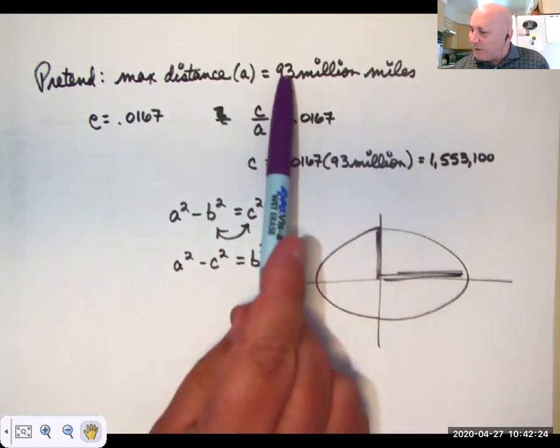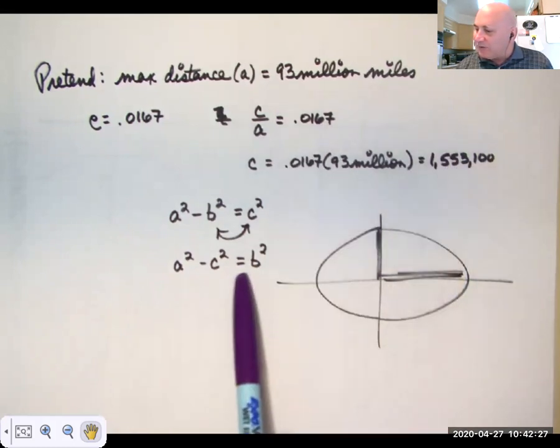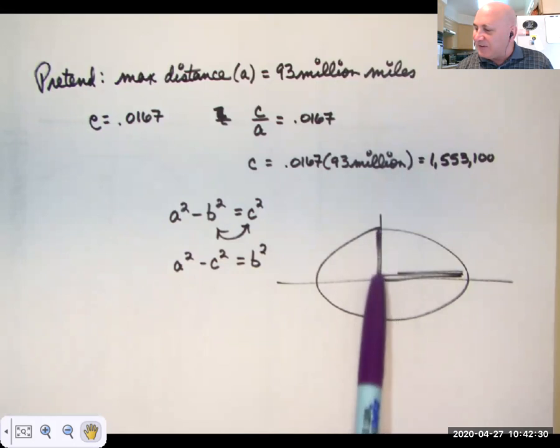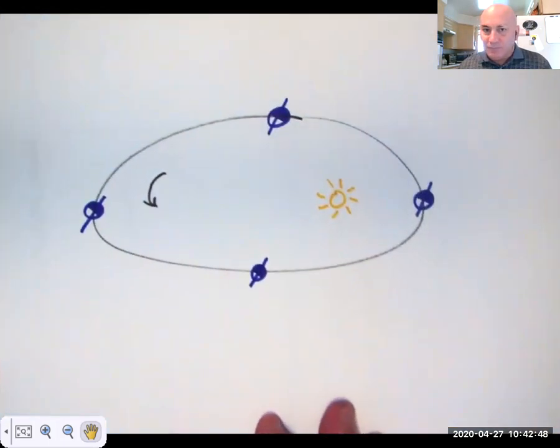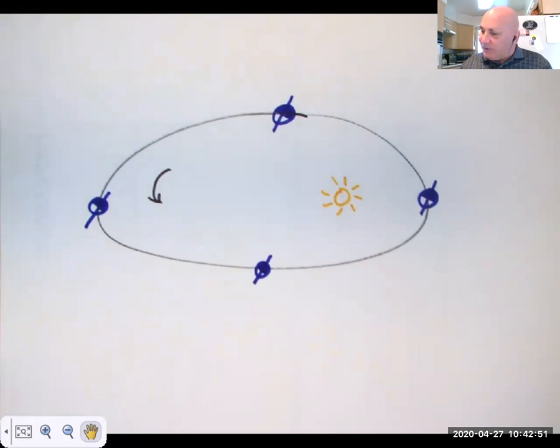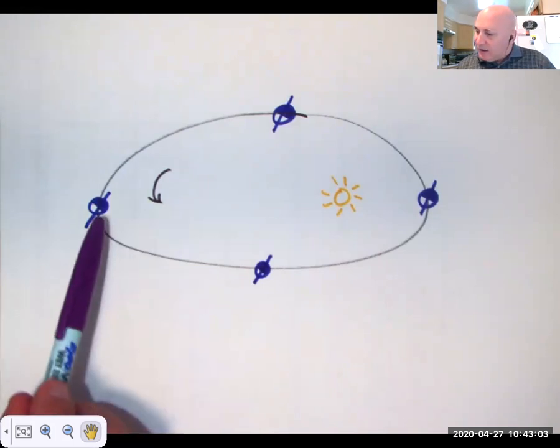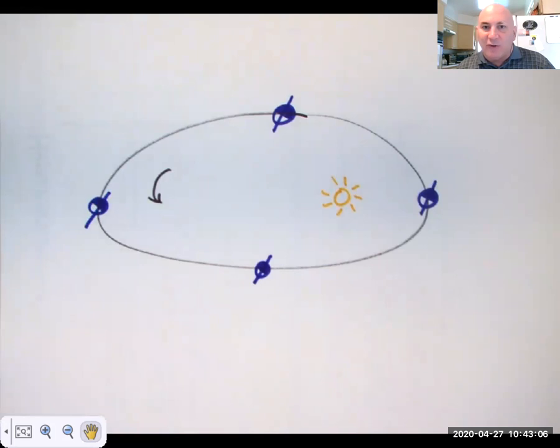And you can do a squared minus c squared would give us b squared. So we could then get this distance from the sun. And again, I've elongated it to make it pretty obvious that it's an ellipse, but it looks pretty close to a circle. But just for giggles, let's take a look at this. So here's the sun. Again, this is not to scale by any stretch. And we all know that the earth tilts on an axis. That's what gives us our seasons.